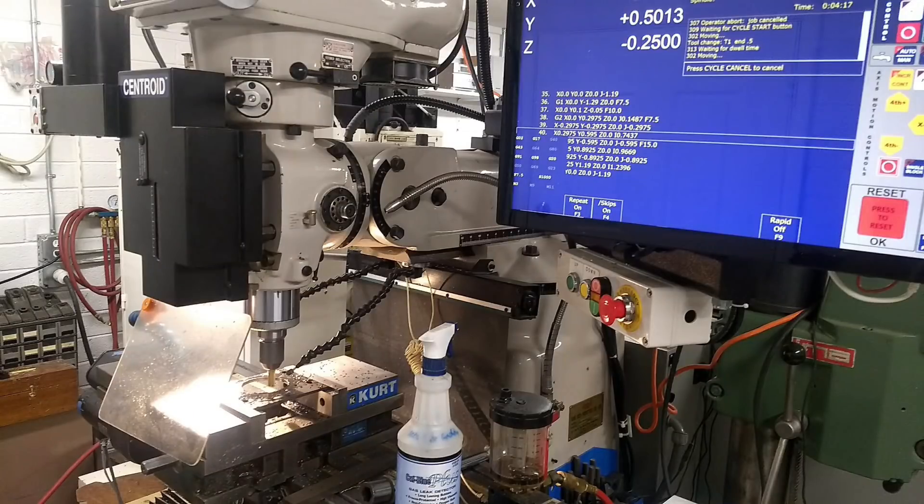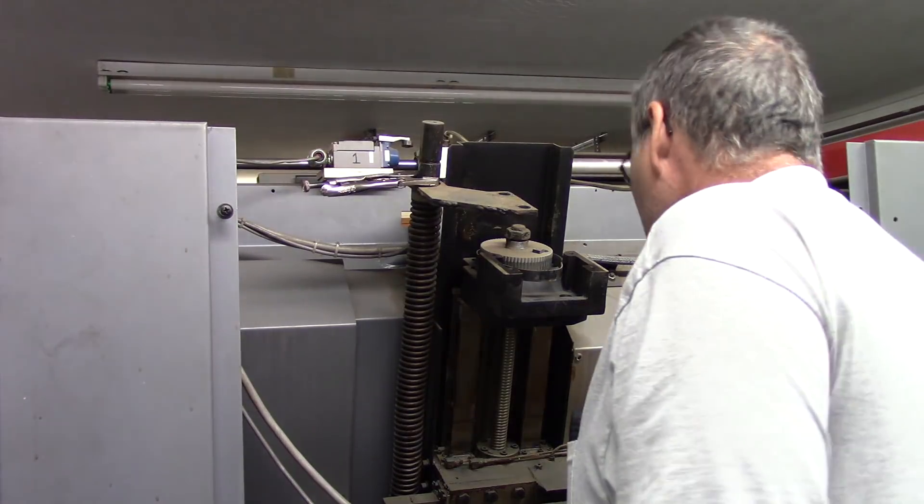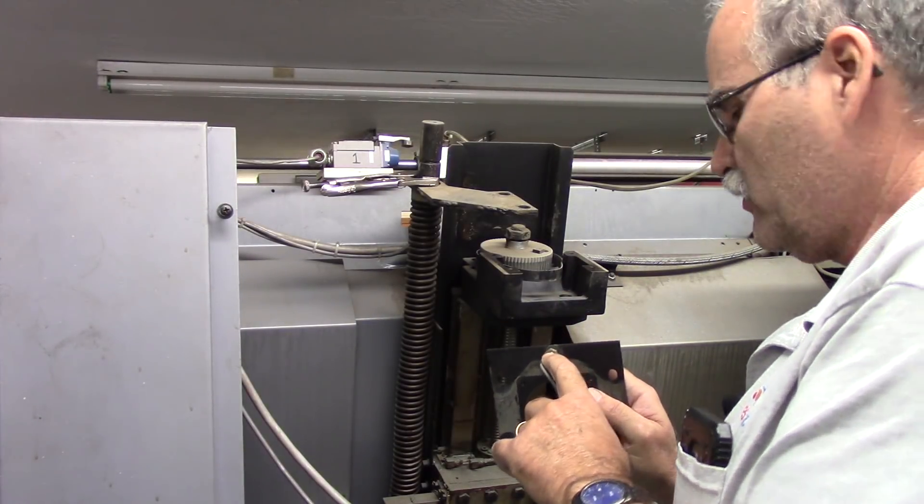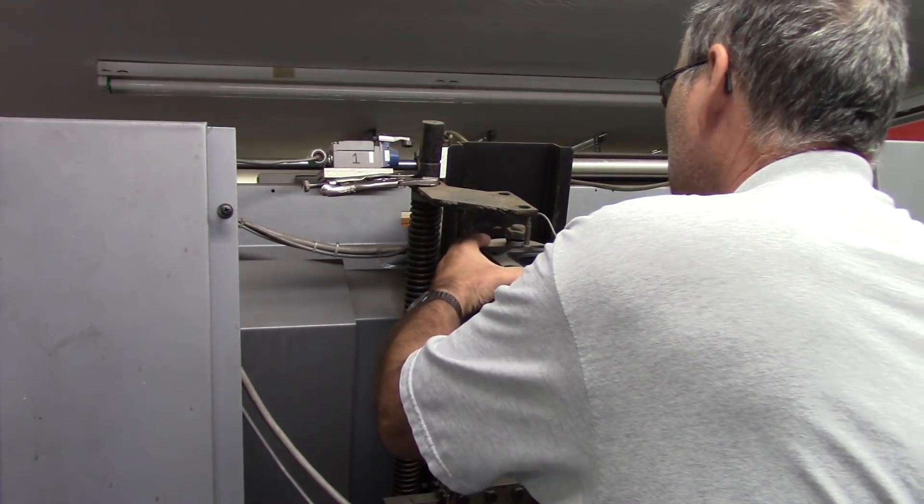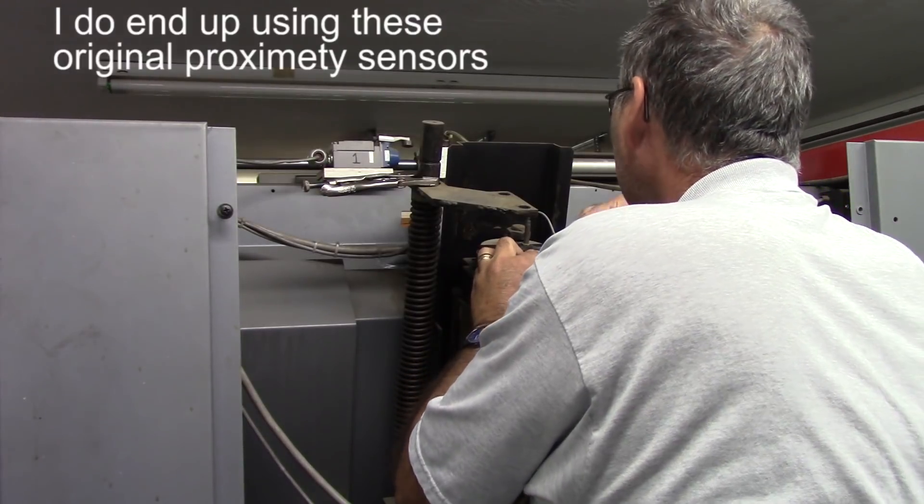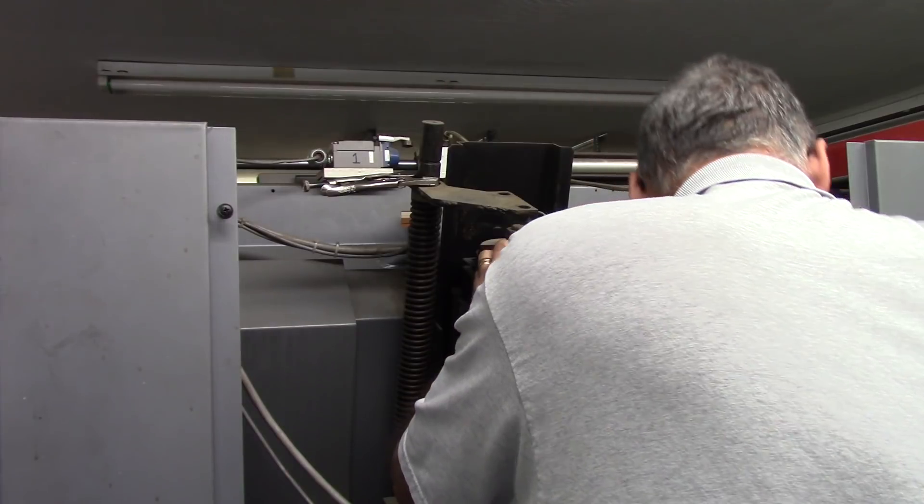Let's go ahead and get the motor mounts back on now that they've been machined. They have proximity sensors on there which I would assume was used for homing the machine previously. I'm going to go ahead and leave them on for now. I can always remove them if I don't use them, but it doesn't hurt to leave them.